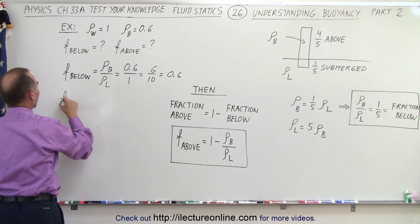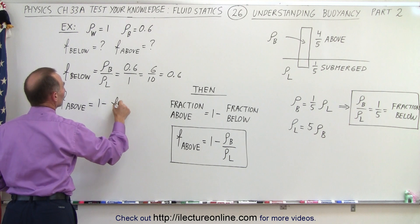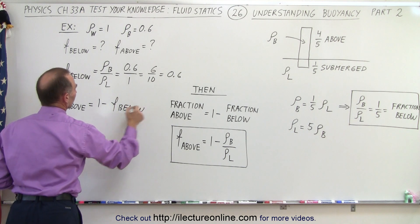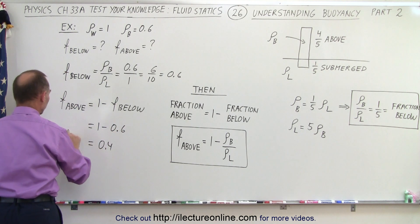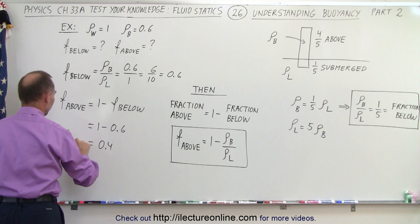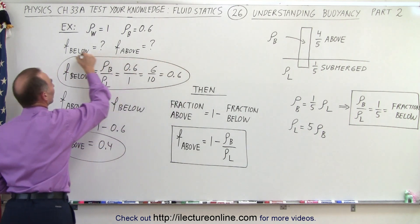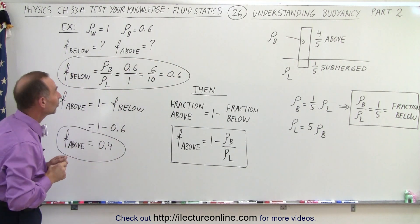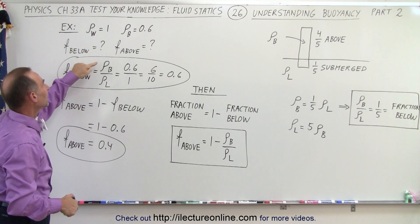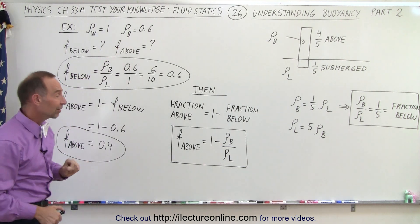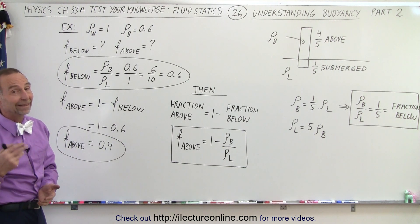The fraction above the surface equals 1 minus the fraction below, so that's 1 minus 0.6, which equals 0.4. So 0.4 is the fraction above the surface and 0.6 is the fraction below — and it's as simple as that. Notice that when the liquid is water, with a density of 1, the fraction below is simply equal to the density of the object, and 1 minus that equals the fraction above the surface. And that is how it's done.